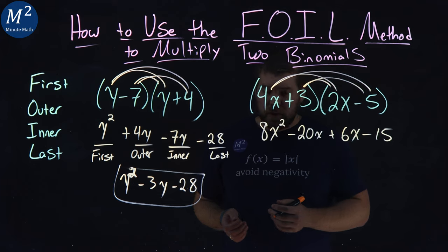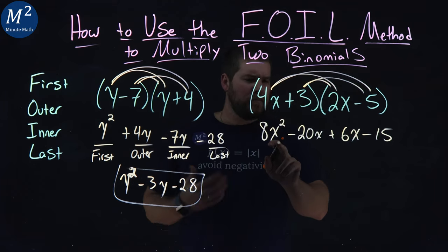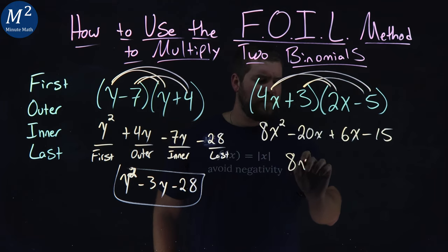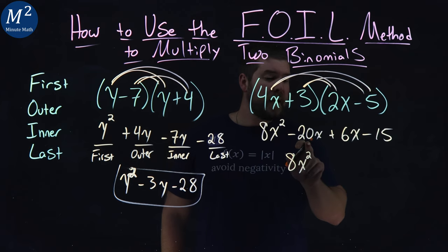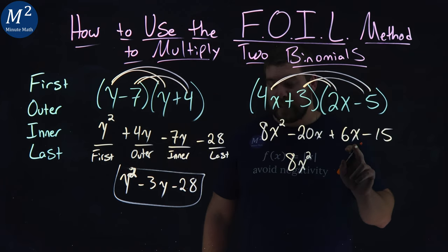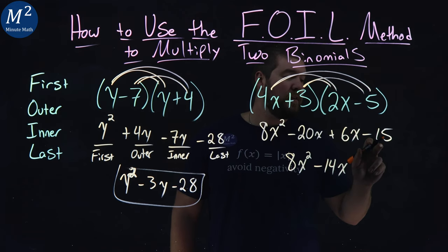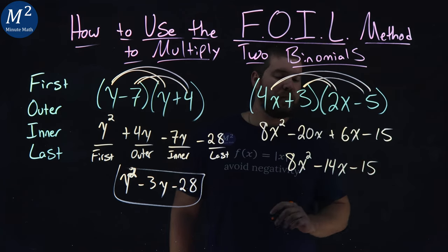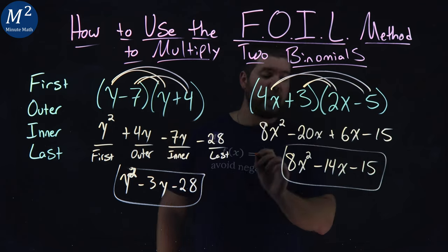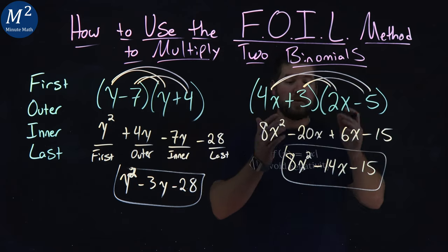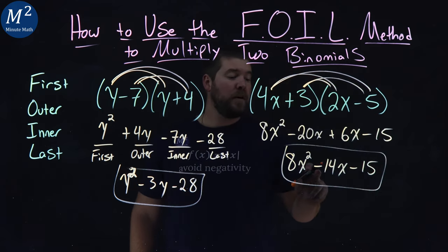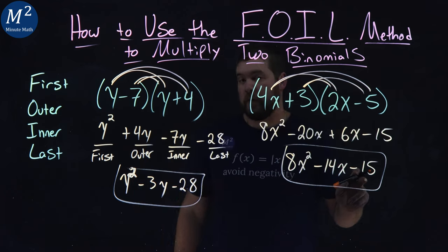So to do that, well, nothing with 8x squared. Bring that down. 8x squared. Minus 20x plus positive 6x is minus 14x. And lastly, this minus 15 comes down. And there we have it. It's been simplified. And so the second binomials being multiplied come out to be 8x squared minus 14x minus 15.